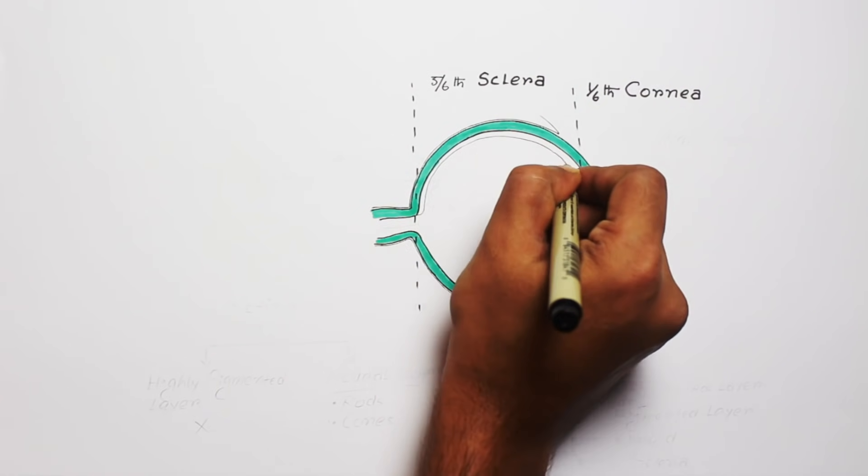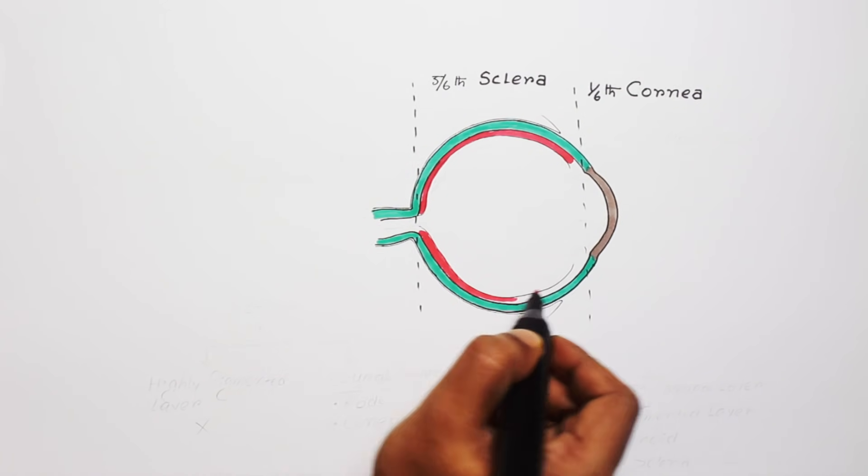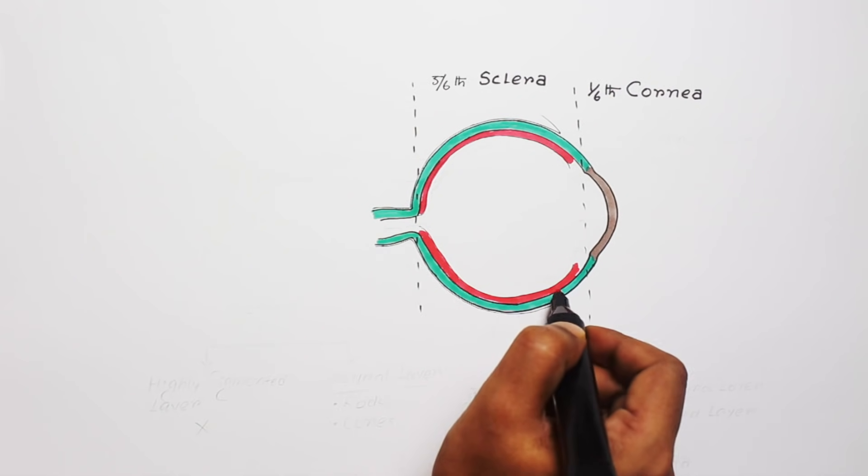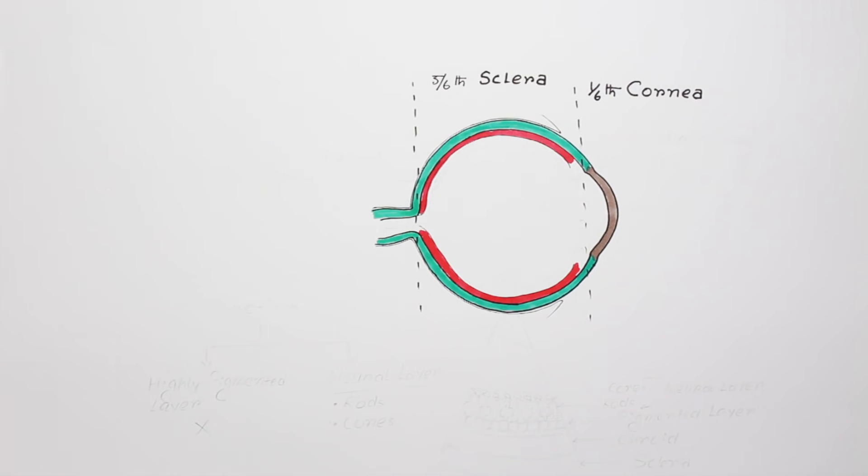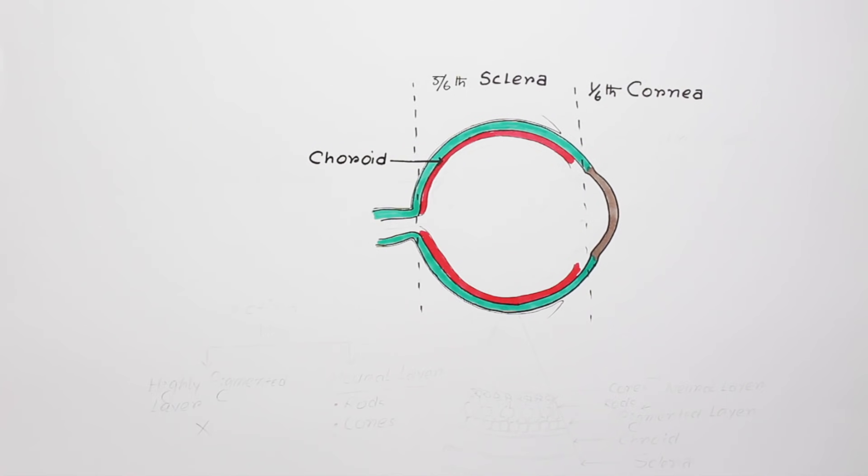Inside the outermost layer, there is a highly vascular layer which brings oxygen and nutrition for the other layers. It is present inside and posterior to the outer part. This is called choroid.